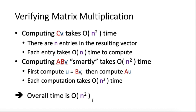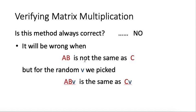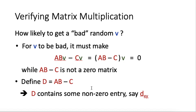Now to complete the discussion, we will need to find out what is the chance of this method working. Is the method always correct? Obviously, no. It will be wrong when A times B is not the same as C, and for the random vector V that we have selected, ABV turns out to be the same as CV. In that case, we hit a certain vector V that fools us into making the wrong conclusion that AB is equal to C.